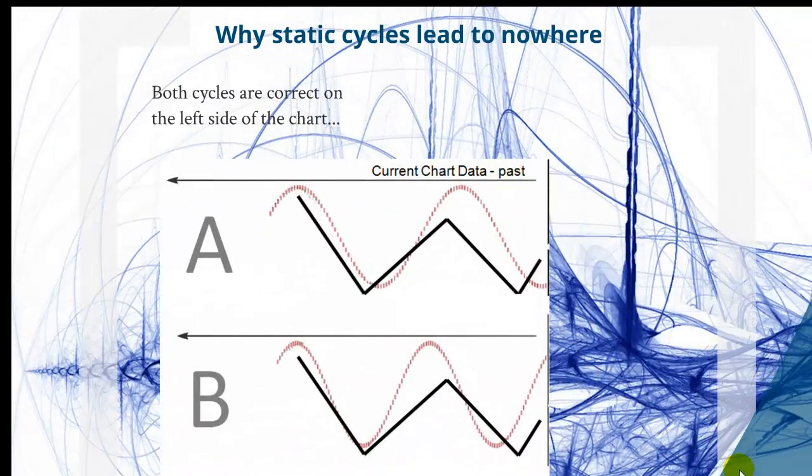Let me give you an example on why static cycles will lead to nowhere. We have two examples here, example A and example B. The black line will be the price behavior, the price chart. We have exactly the same price behavior in both examples.